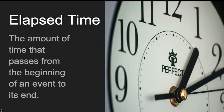I want you to write the definition for elapsed time. Elapsed time is the amount of time that passes from the beginning of an event to its end — for example, from the beginning of a movie to the end, or from the beginning of a class period to the end of school. That would be elapsed time.